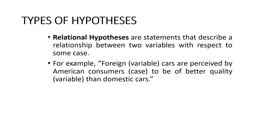What are the types of hypothesis? First, relational. Generally we use relational hypothesis. Relational means, as the name suggests, a relationship between two variables. Relationship hypotheses are statements that describe a relationship between two variables with respect to some cases. For example, foreign cars are perceived by American consumers to be of better quality than domestic cars. This is a relational hypothesis.